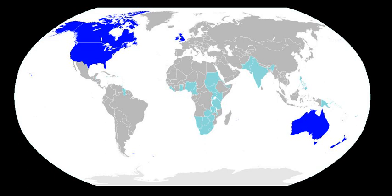By the late 18th century, the British Empire had facilitated the spread of English through its colonies and geopolitical dominance. Commerce, science and technology, diplomacy, art, and formal education all contributed to English becoming the first truly global language. English also facilitated worldwide international communication. As England continued to form new colonies, these in turn became independent and developed their own norms for how to speak and write the language.